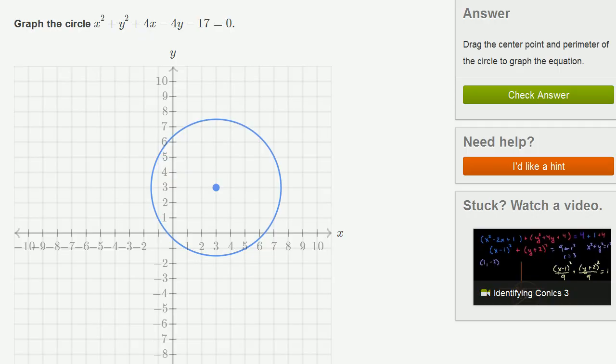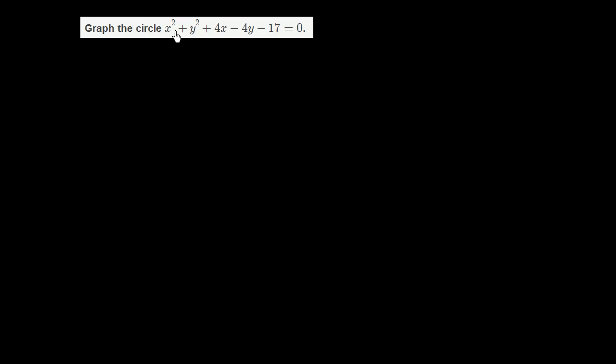Let me get my little scratch pad out and see if we can do that. What I want to do is complete the square in terms of x and complete the square in terms of y to put it into a form that we can recognize. So let's take all of the x terms. I could rewrite this as x squared plus 4x, and I'm going to put some parentheses around here because I'm going to complete the square.